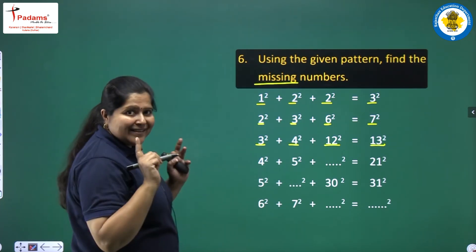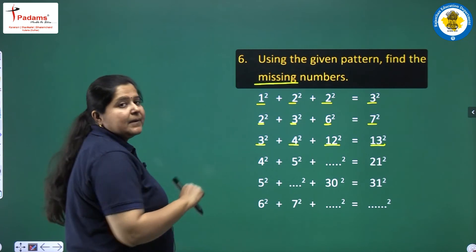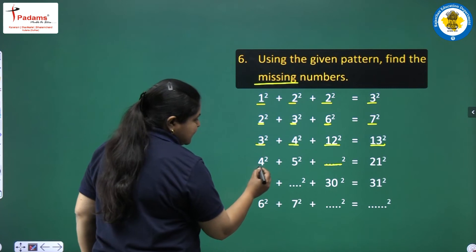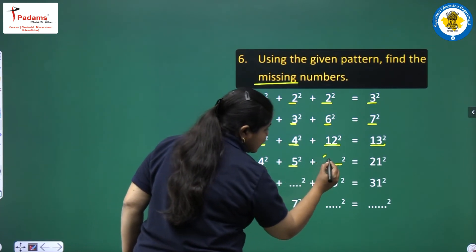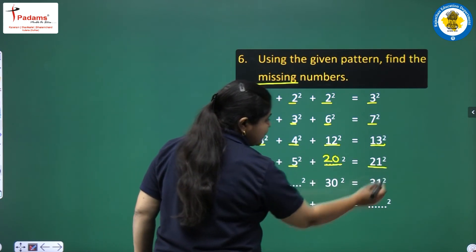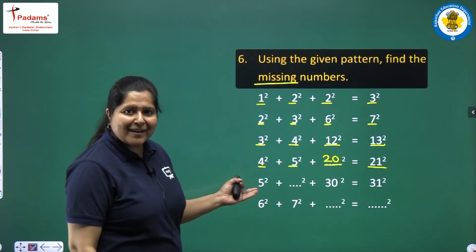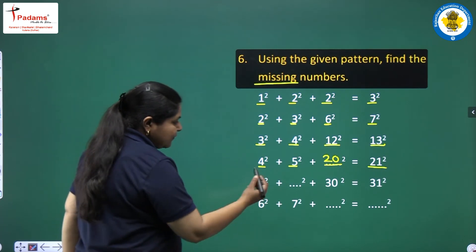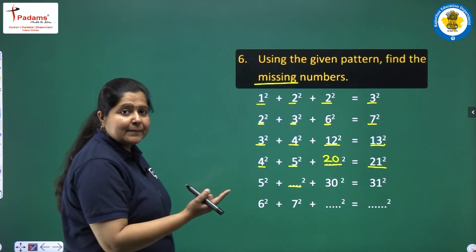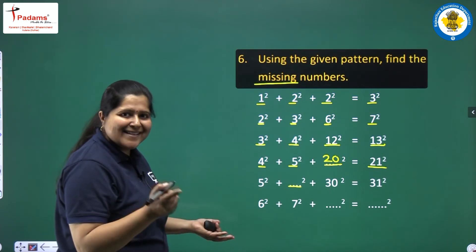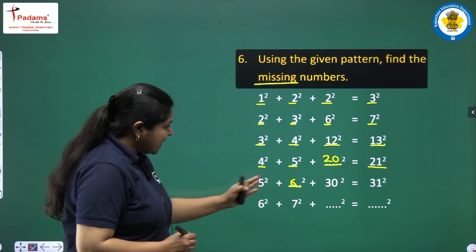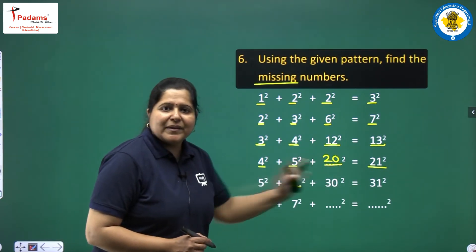This hidden pattern lets us write the missing numbers easily. What number should come next? 4 into 5 is 20, so 20 squared, and the successor of 20 is 21, so 21 squared. Similarly, 5 times 6 is 30, so 6 squared comes here, and 30's next number is 31.